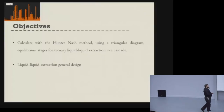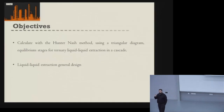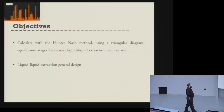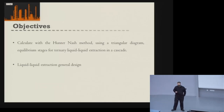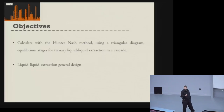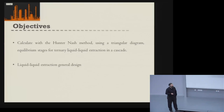We're going to move on to taking that single-stage equilibrium system to a multi-stage equilibrium system. We're going to do that with something called the Hunter-Nash method, which is akin to the McCabe-Thiele or the Ponchon-Savarit method for distillation. It's a liquid-liquid extraction equivalent of those methods.